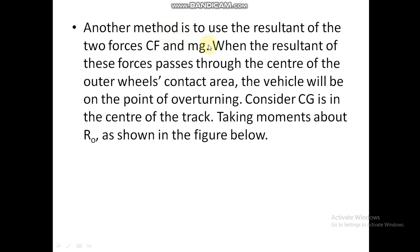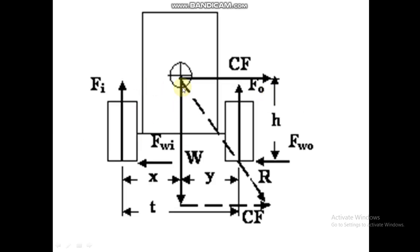Another method uses the resultant of the two forces — centrifugal force CF and weight mg. When the resultant of these two forces passes through the center of the outer wheel contact area, the vehicle is on the point of overturning. If the resultant shifts further to the right, the vehicle will overturn. This will be covered in detail in the next part of the video. Thank you.